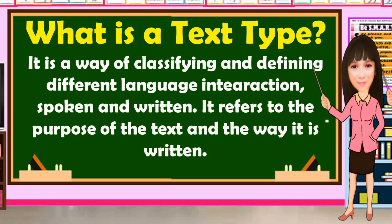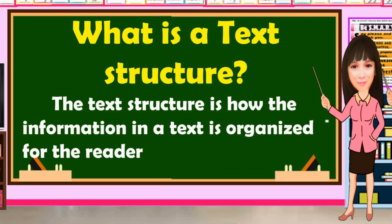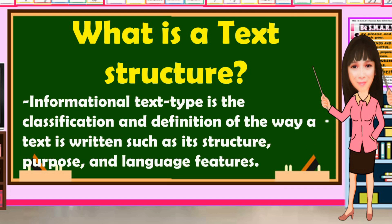What is a text type? It is a way of classifying and defining different language interaction, spoken and written. It refers to the purpose of the text and the way it is written. What is a text structure? The text structure is how the information in a text is organized for the reader. Informational text type is the classification and definition of the way a text is written, such as its structure, purpose, and language features.